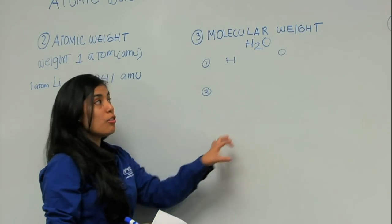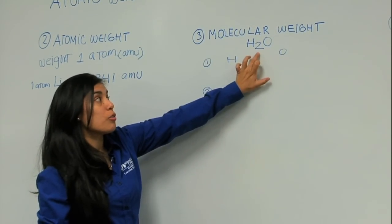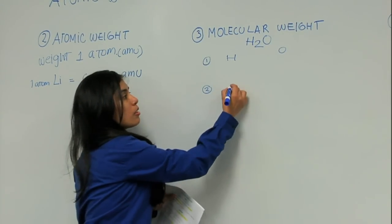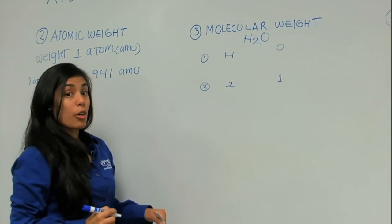Second, I need to know how many of these atoms are in this formula. And I have two hydrogens and one oxygen.